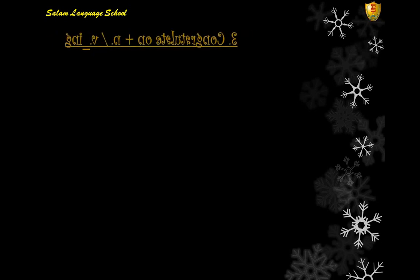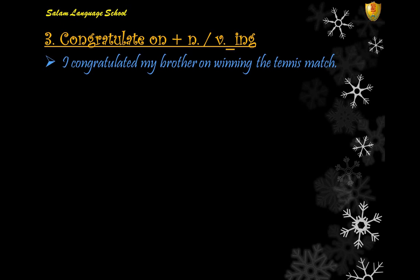Number three: 'congratulate on'. 'Congratulate on' is followed by a noun or a gerund. For example: 'I congratulated my brother on winning the tennis match', or 'I congratulated my brother on the match.'